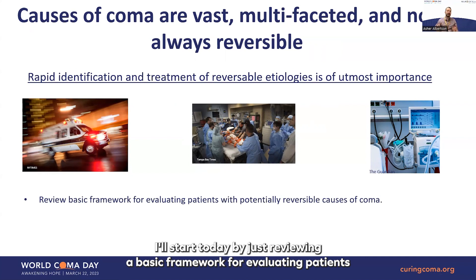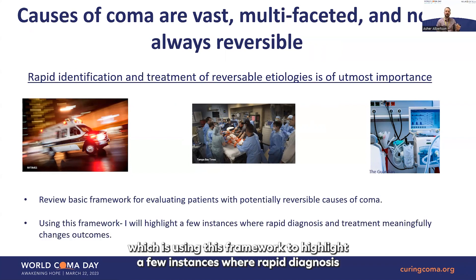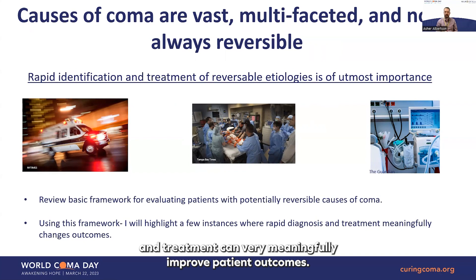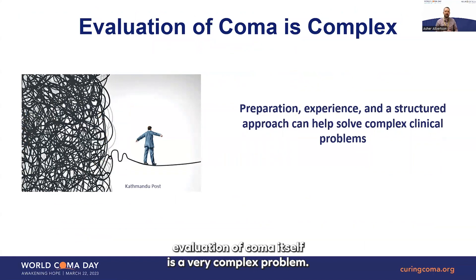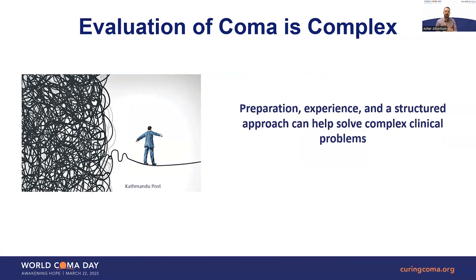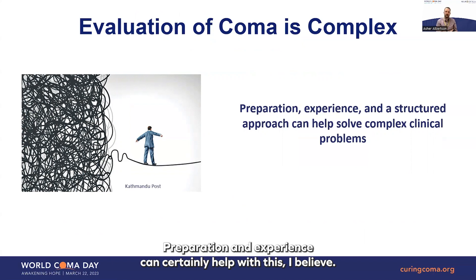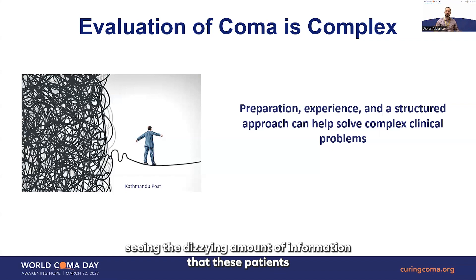I'll start today by reviewing a basic framework for evaluating patients with a potentially reversible cause of coma. Then we'll move into using this framework to highlight a few instances where rapid diagnosis and treatment can very meaningfully improve patient outcomes, and we'll look at some of the data supporting that. Evaluation of coma is a very complex problem — there's a lot of information, and it can be dizzying and overwhelming, and unfortunately that can sometimes lead to inaction or incomplete action.